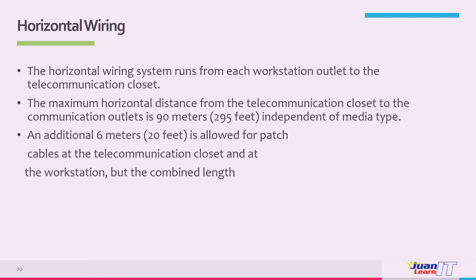The work area must provide 2 outlets. The horizontal cable should be a 4-pair 100 ohm UTP cable — the latest standard specifies Category 5E — or a 2-fiber 62.5/125 micrometer fiber optic cable, or a 50/125 micrometer multi-mode fiber optic cable. Coaxial cable is no longer recommended. Horizontal cabling connects floors, wiring closets, or wall plates in the work area, including horizontal cables, telecommunication outlets or connectors, mechanical terminations, and patch cords or jumpers in the telecommunication room.